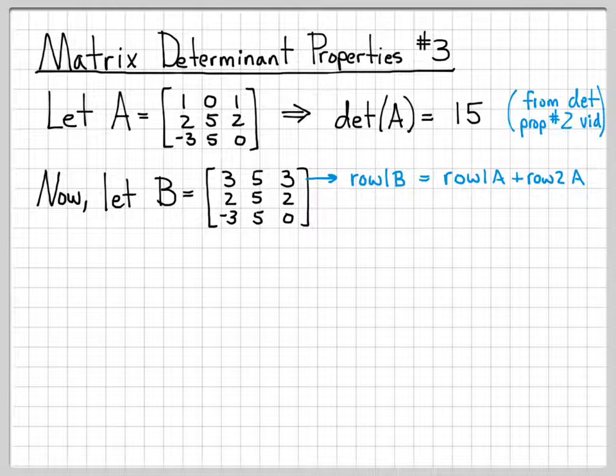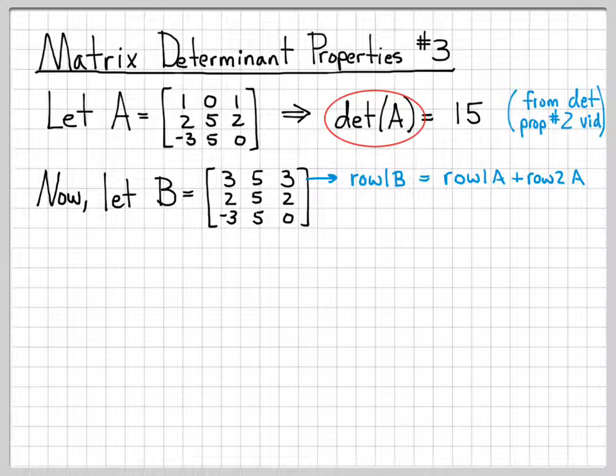So the first row of B has actually been formed by taking a linear combination of rows from A. So the question we kind of have now is, how has the determinant of B been impacted? We know what the determinant of A is. Is there anything that we know about the determinant of B, since the matrix B is very similar to matrix A?